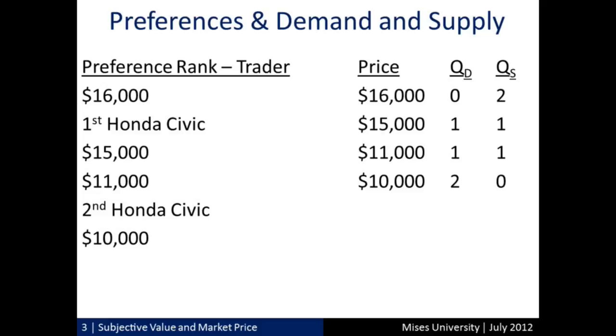We can conjecture, because of the first law of utility, that there would be some price low enough that this person could be enticed to purchase a second Honda Civic — as long as he considered it still a good to him, as long as he could think of a use for it. Let's say he intends to put the first Honda Civic to the use of commuting — his most valued use — but he can think of a valuable use for another one that could be used simultaneously, perhaps lending it to a friend, or having it for days when his primary car breaks down.